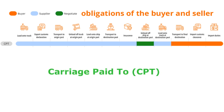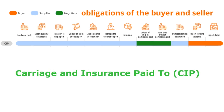The fifth one is CPT, Carriage Paid To. With CPT, the seller delivers goods to a carrier and has full responsibility to cover the cost of the carriage of goods to the destination. All risks and costs transfer to the buyer after delivery of the goods. The sixth one is CIP, Carriage and Insurance Paid To. As with CPT, the seller is responsible for delivering the goods to a carrier and also paying the cost of transport. Here, the seller is also responsible for insuring the goods.